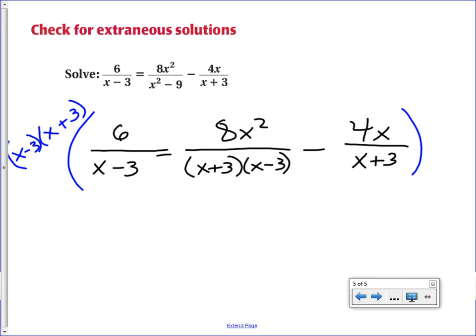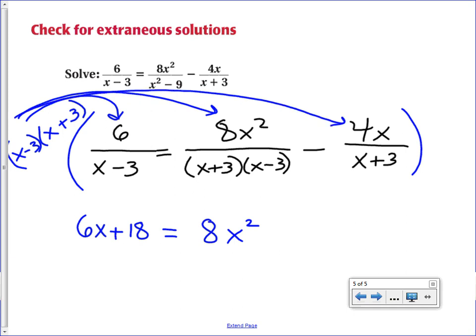Let me distribute this by the first fraction. It already has an x minus 3 in the denominator, so that will cancel. The numerator then will be 6x plus 18 equals. Bring it to the second fraction. The second fraction has both in the denominator, so both will cancel. I don't have to do any multiplying here. I'm just left with 8x squared. And then by the last fraction, it has an x plus 3 in the denominator, so the x plus 3s will cancel. And all I have to do is minus 4x times x minus 3.